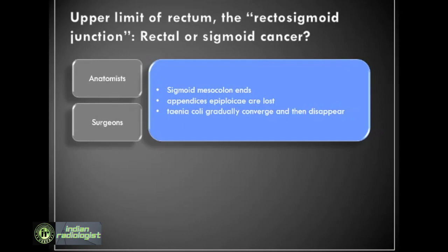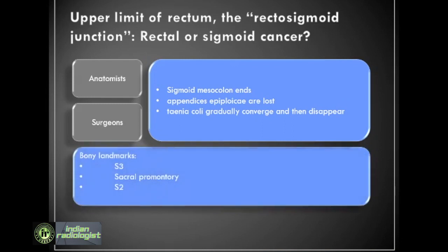These features are not visible to the radiologist or internally by the endoscopist, hence not applicable in a practical setting. The bony landmarks used by anatomists are several. Most commonly, the S3 vertebra is considered as the upper limit of rectum by anatomists. The sacral promontory has also been used as a landmark in the Swedish rectal cancer trial and several other guidelines. Even the second sacral segment has been used as a landmark in Japan and Holland.